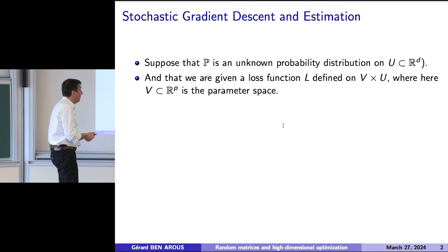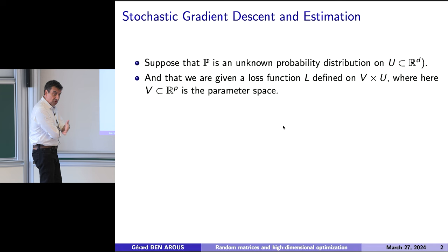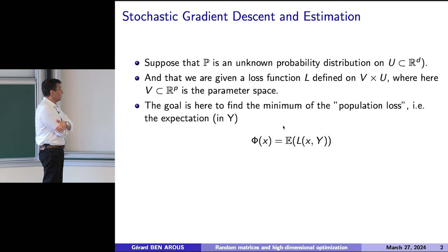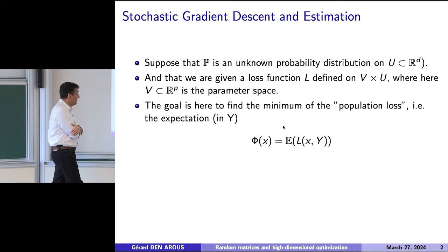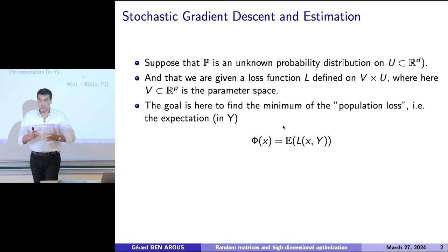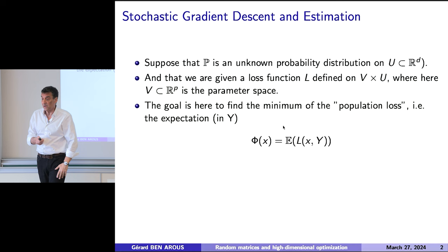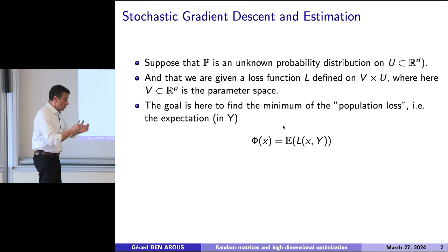We have a loss function L defined on V cross U, where V is the parameter space. So the loss function is a function of the parameter and the data. The goal is to find the minimum of the population loss, which I call phi. The population loss means the expectation — x is the value of the parameter — the expectation of the loss function on the data with this unknown probability distribution with a given parameter. The machine learning thing is to build a loss function phi such that the point where this function is minimum gives you a good estimation of the parameter you're trying to find. You're completely free to choose this L, as long as this is satisfied.